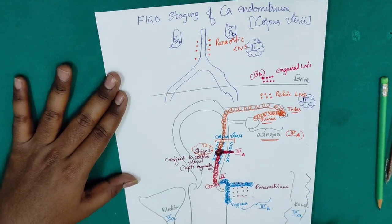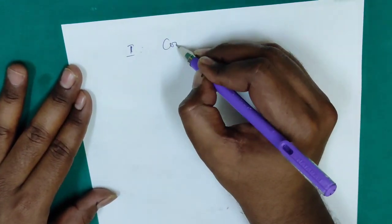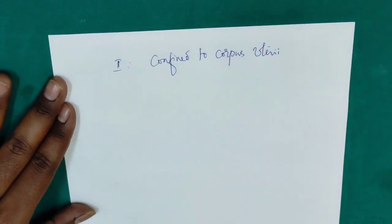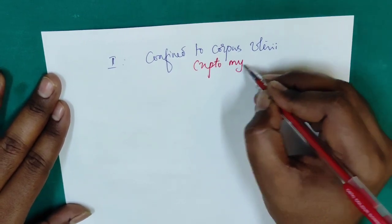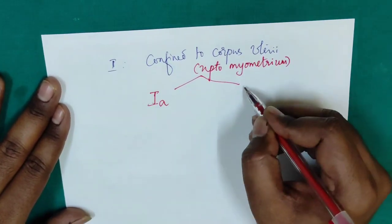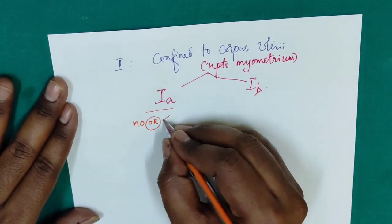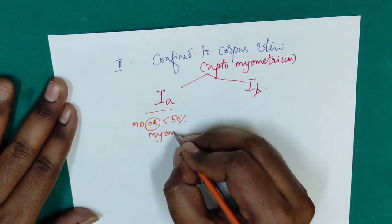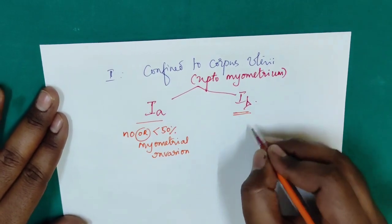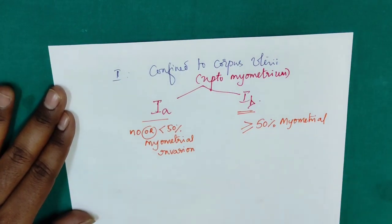I am going to write all these points once again. Stage 1 — it is confined to corpus uteri. Confined to corpus uteri means it is up to myometrium, not serosa. It is divided into 1a and 1b. Stage 1a is no myometrial invasion or less than 50% myometrial invasion. Stage 1b is more than or equal to 50% myometrial invasion.